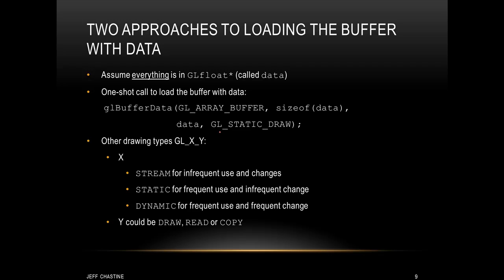There are two different approaches when you're loading a buffer with data. For the first example, let's assume that everything is located in a GLfloat array called data. If that's the case, we might do a one-shot call to glBufferData, passing it the constant GL_ARRAY_BUFFER, followed by the size of the array in bytes, then the actual data, followed by the constant GL_STATIC_DRAW. This transfers everything in data over to the GPU. There's a little discussion about GL_STATIC_DRAW — it follows the template GL_x_y, where x is either stream, static, or dynamic, and y could be draw, read, or copy. For this class we'll be using static and draw almost exclusively.